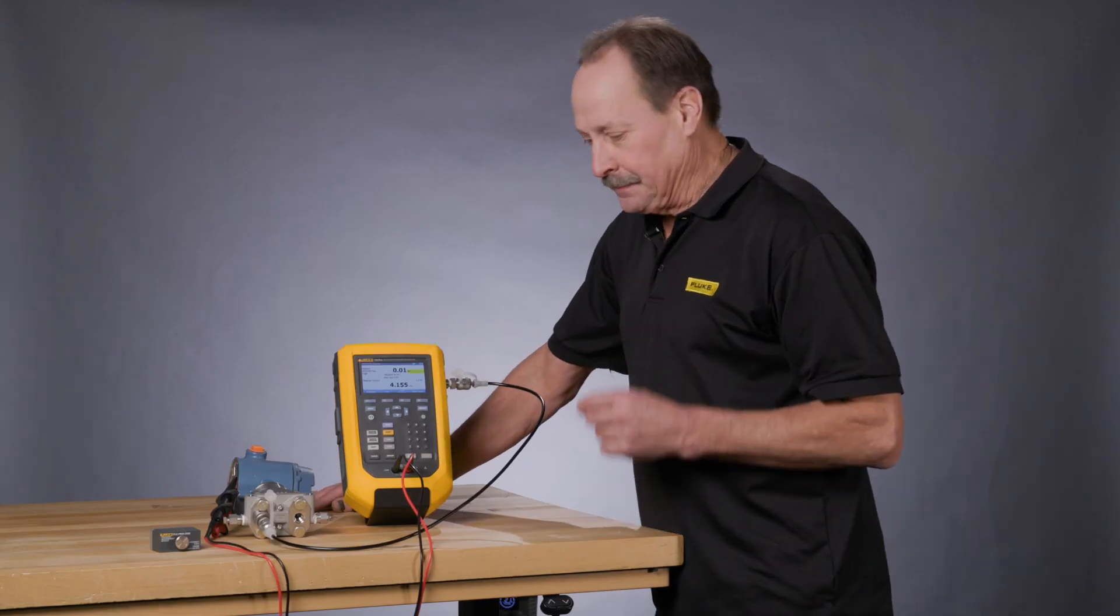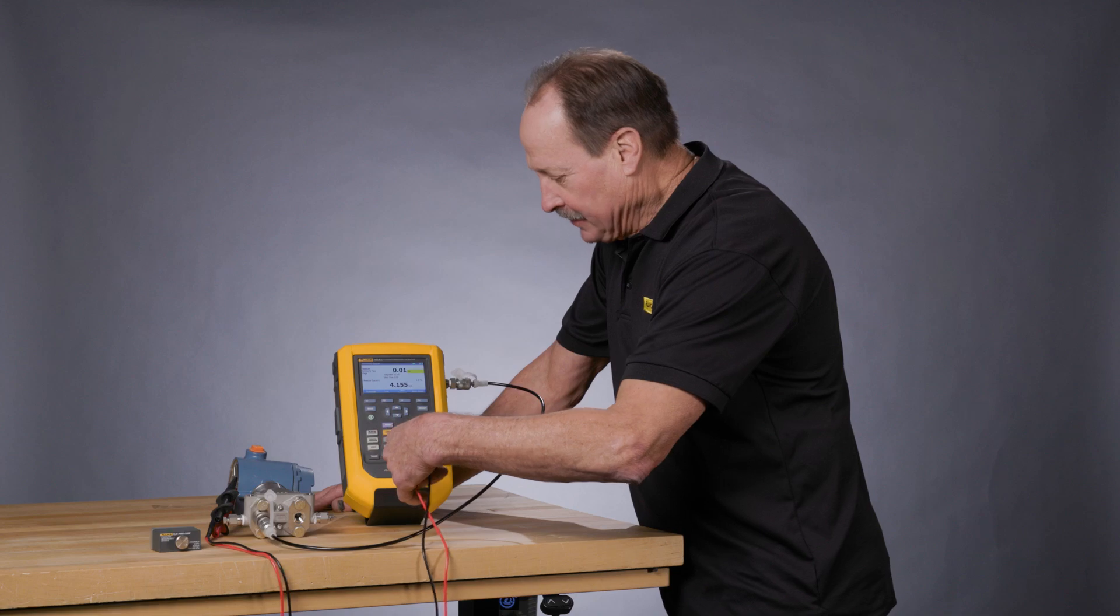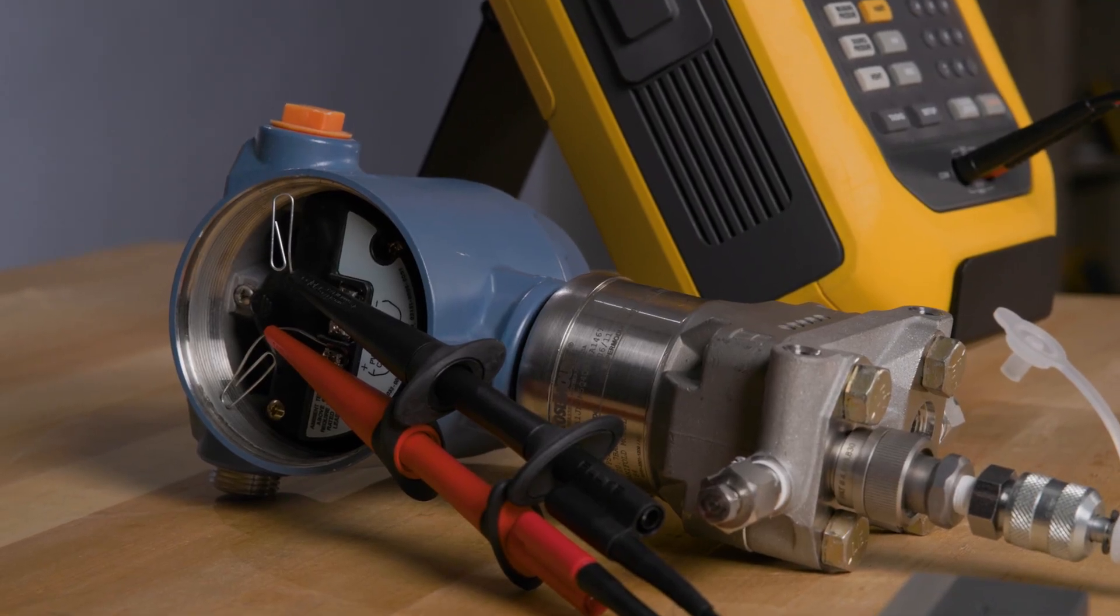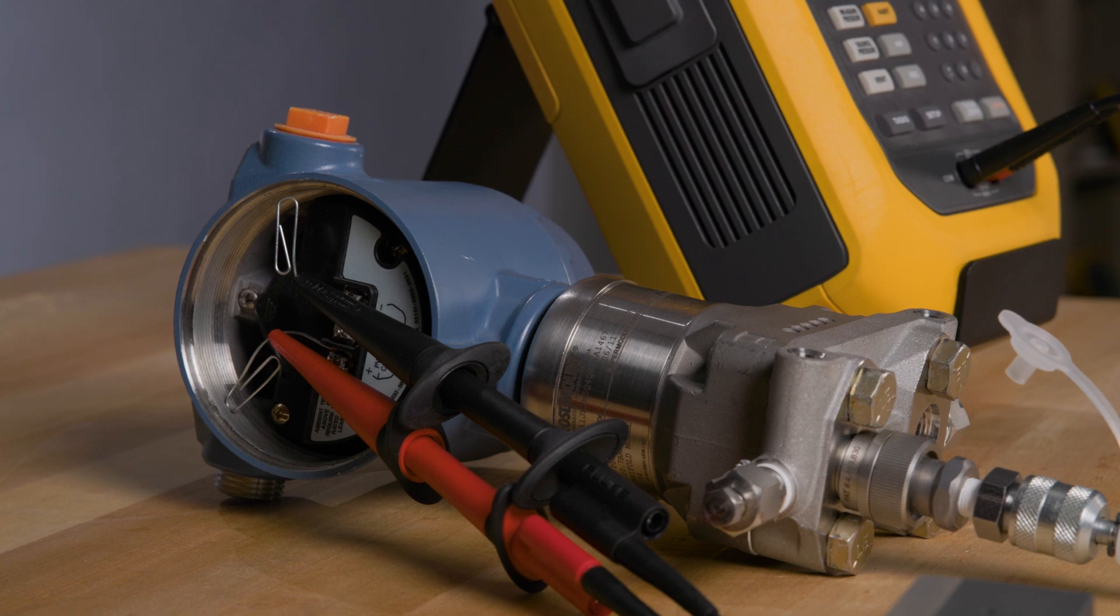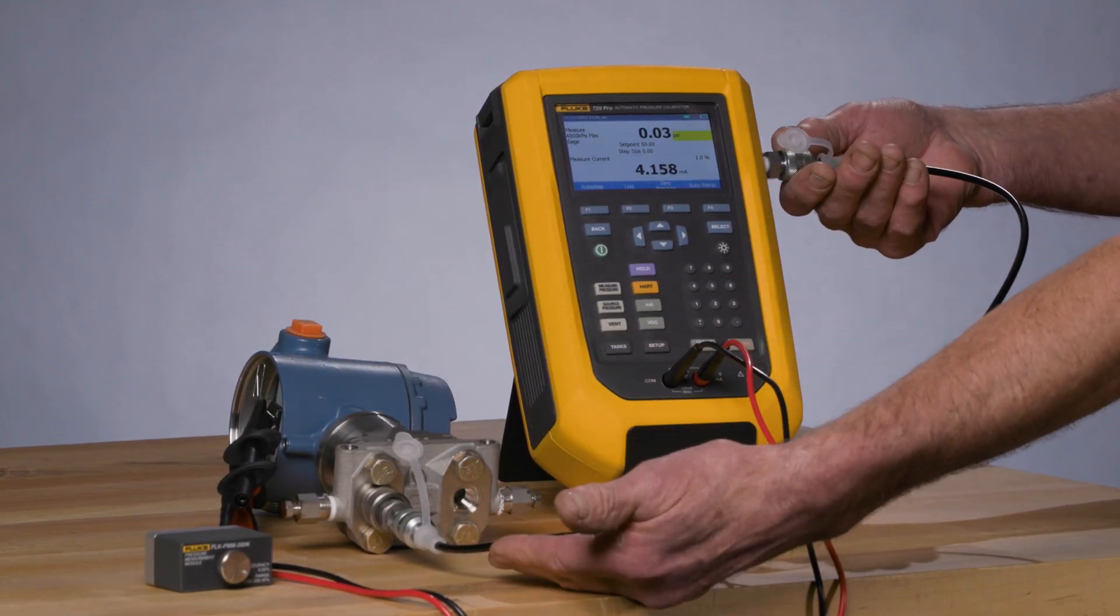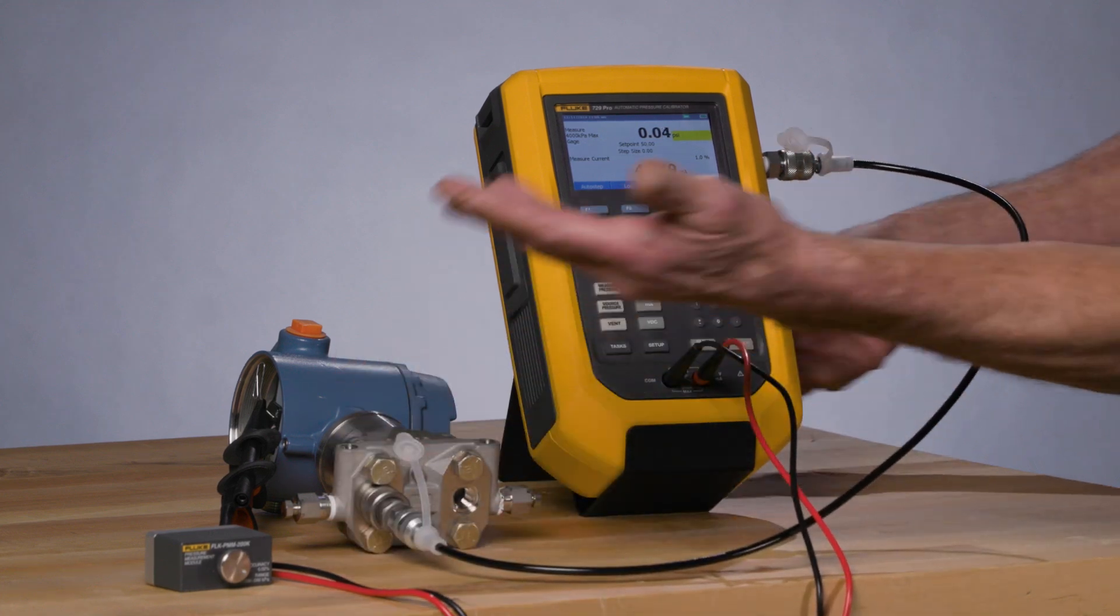To begin the test, we have to get all connected to the milliamp jacks, and we'll be powering the transmitter and recording the milliamp signal as drawn from the 24 volt supply, and the output pressure of the 729 Pro is connected to the input of the transmitter.